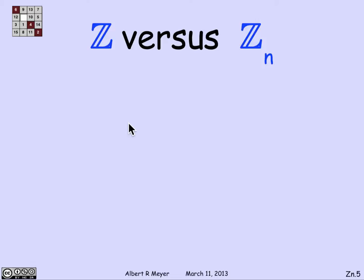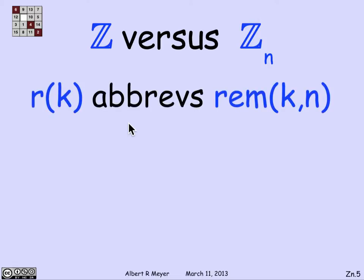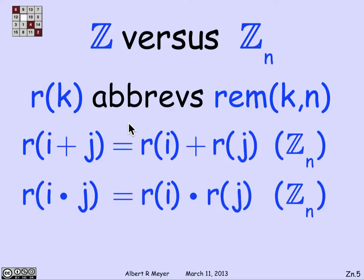So what's the connection between the set of all the integers and the integers mod n? And we can state this abstractly in the following way. Let's just, for convenience, abbreviate the remainder of k on division by n as r(k). So n is fixed. And what's the connection between Z and Z_n? Well, it's fairly simple. If you take the remainder of i plus j, that's literally equal to taking the sum of the remainders in Z_n.